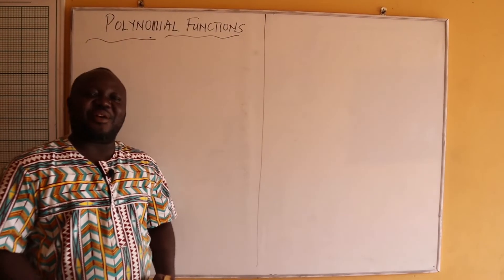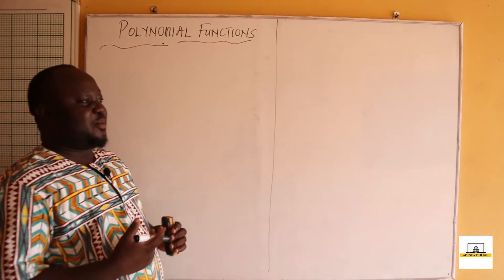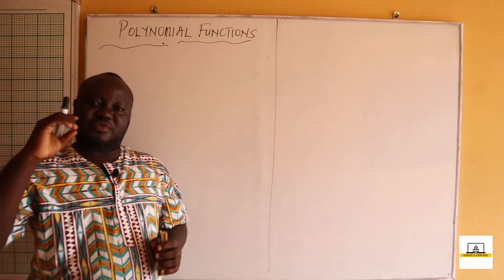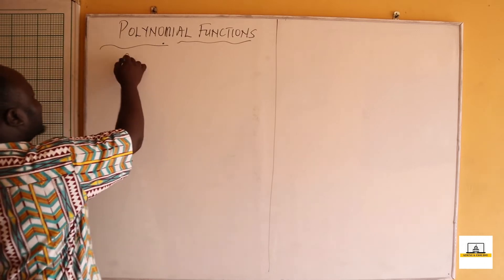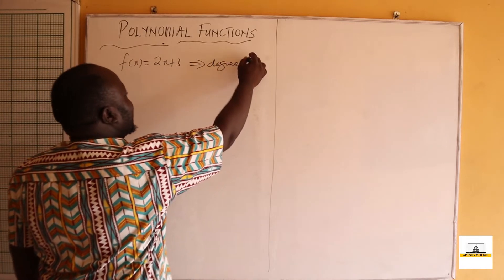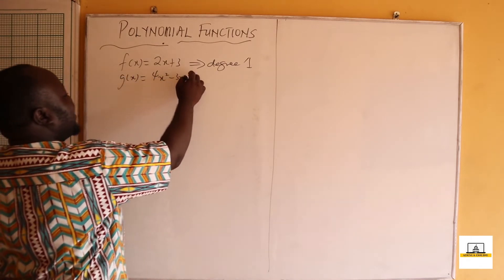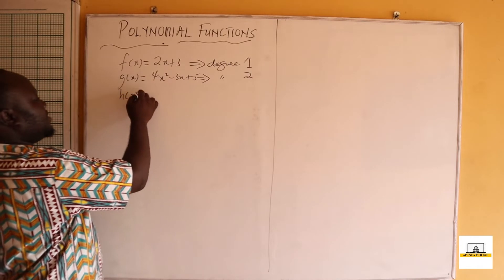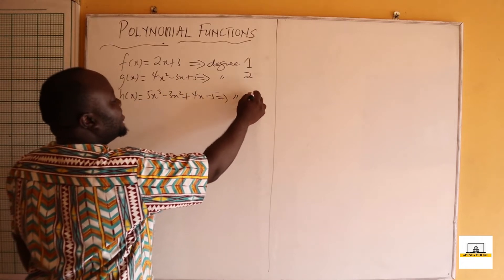Hello students, today we are going to treat polynomial functions. A polynomial is any expression or equation which has a particular number of degrees. The highest degree tells you the type of polynomial. For example, f(x) = 2x + 3 is a polynomial of degree 1; g(x) = 4x² - 3x + 5 is degree 2; and h(x) = 5x³ - 3x² + 4x - 5 is a polynomial of degree 3.